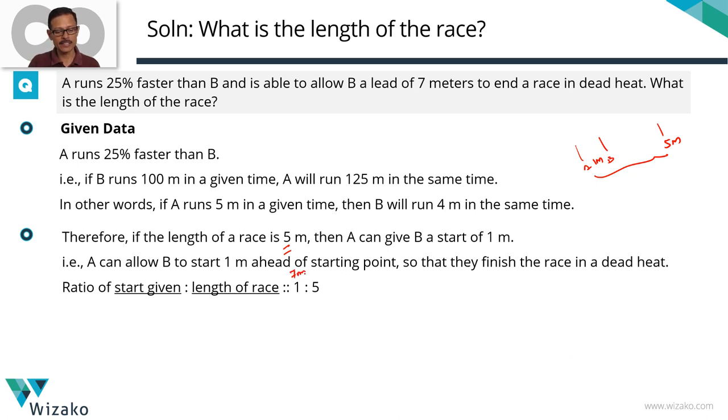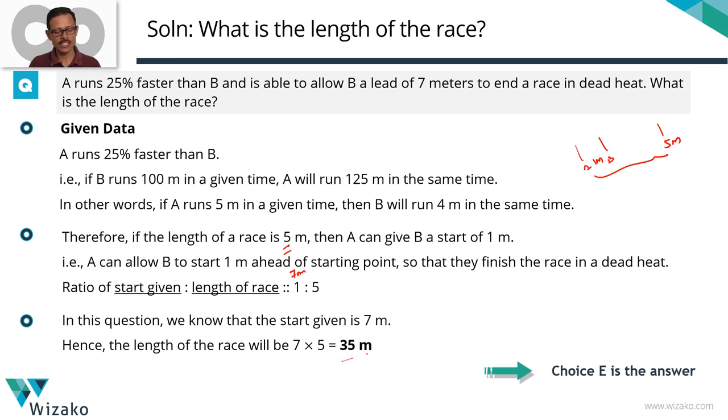Start given is mentioned as 7 meters in this question. Therefore the length of the race is going to be 5 times 7, which is equal to 35 meters. Choice E is the correct answer to the question.